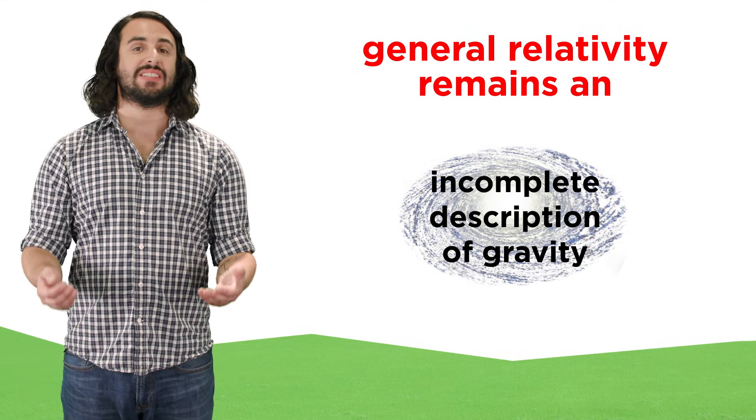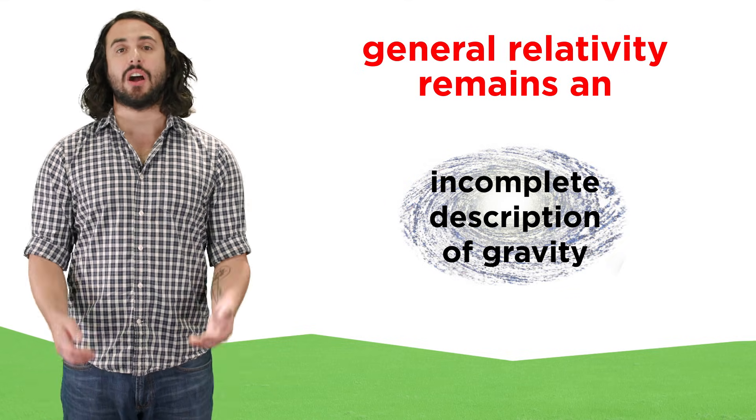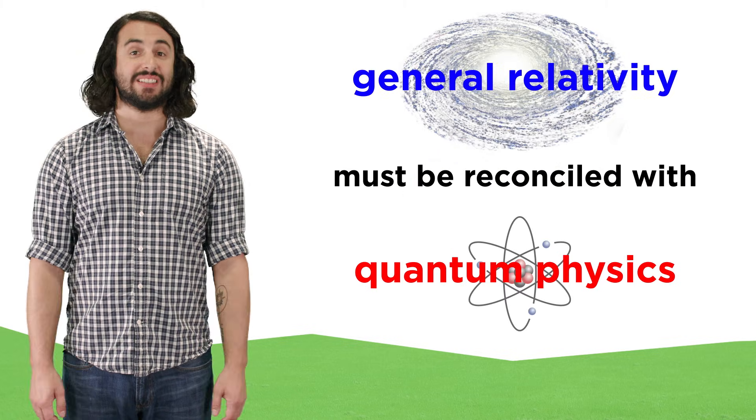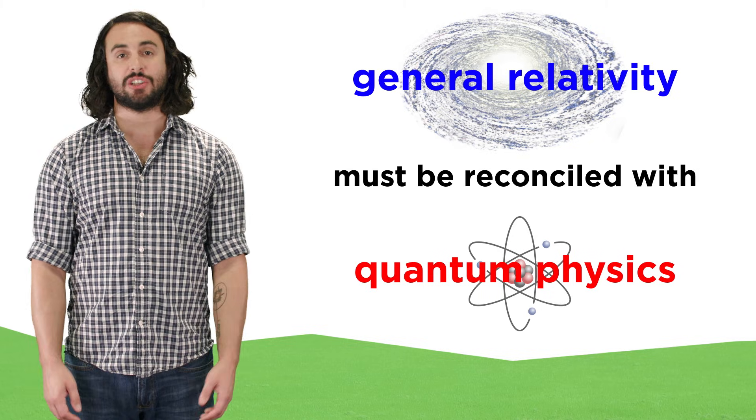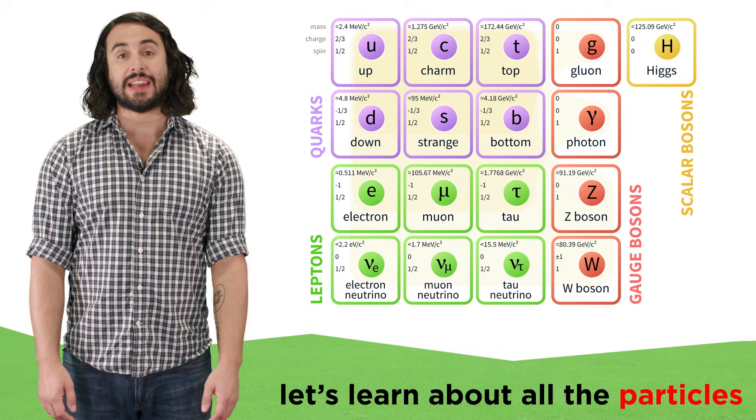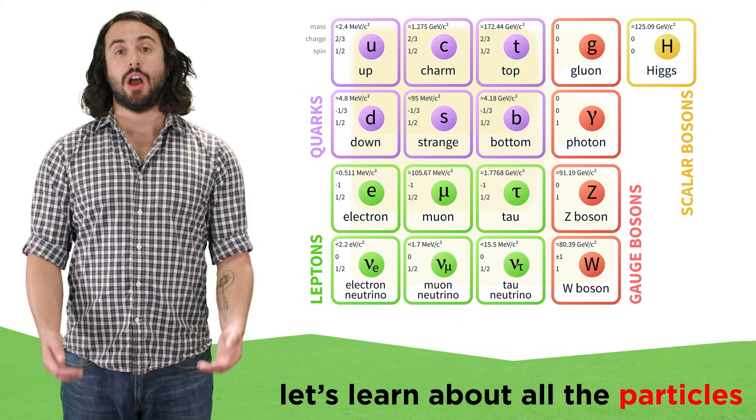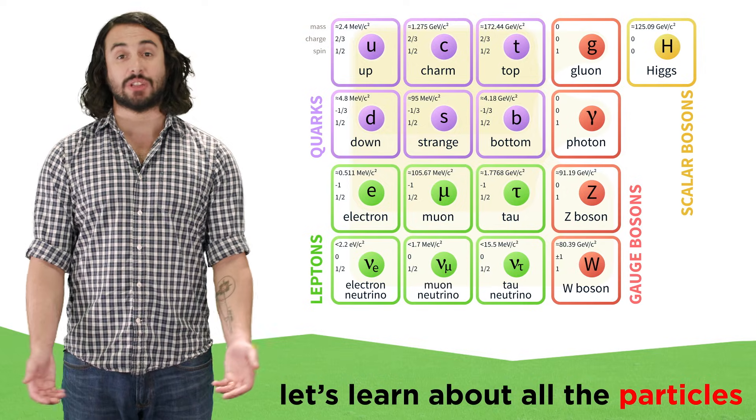But as strong as the theory of general relativity is, it is not complete because it has not merged with the particle world. That is to say, we do not yet know how general relativity can be reconciled with quantum physics. To understand this problem, we need to do a comprehensive survey of all particles so that we know exactly what we are dealing with, so let's move forward now.